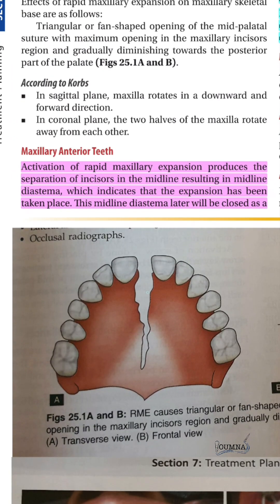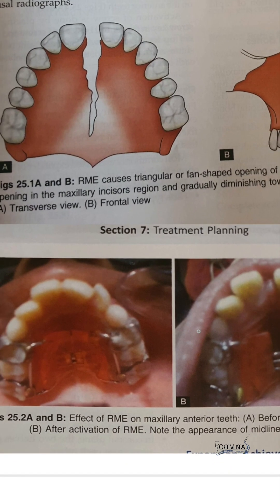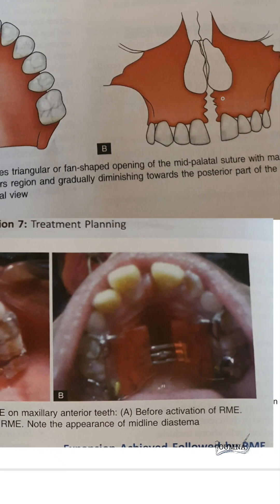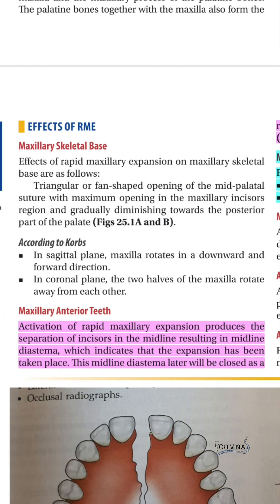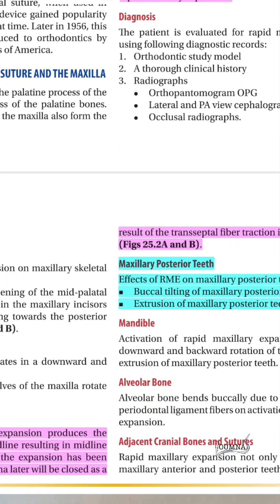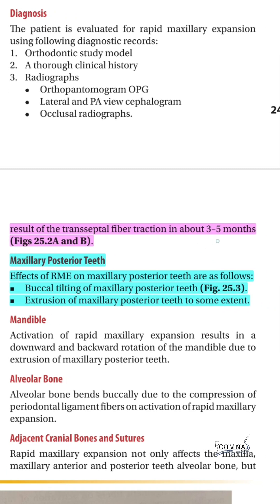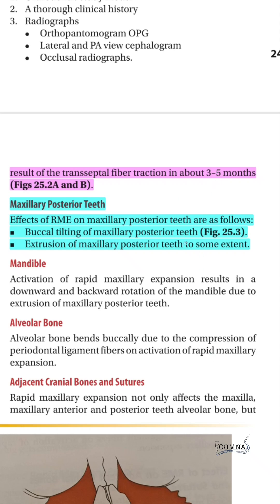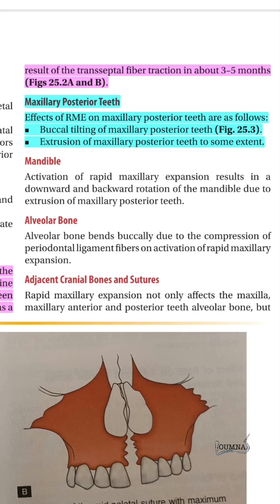When we activate the expansion, the suture opens in a fan shape and a midline diastema develops between the two central incisors, as can be seen clinically after activation. This diastema will be closed by transseptal fiber traction within three to five months. Therefore, it is advised to place a retention device after finishing the expansion to maintain the results obtained.